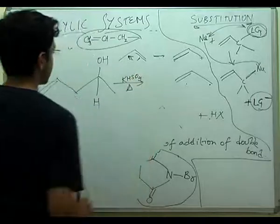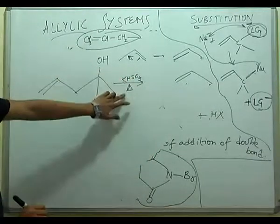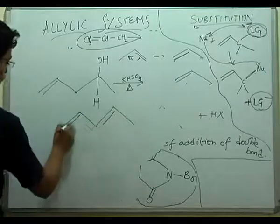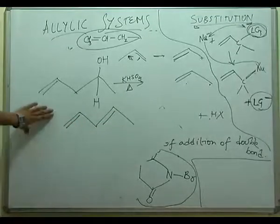If we provide KH-tert-butoxide which is a good dehydrating agent and heat, we find a conjugated diene. So this is also an important reaction.